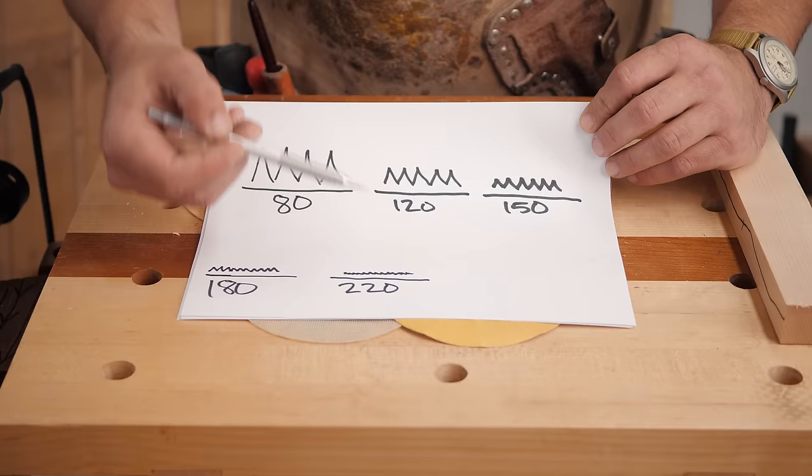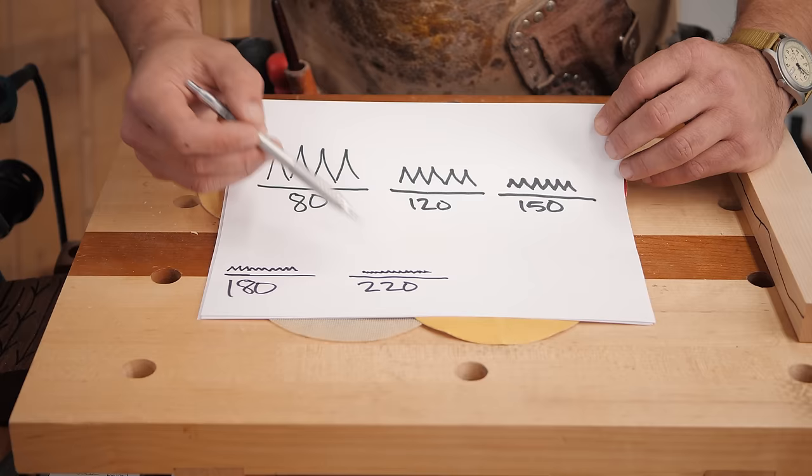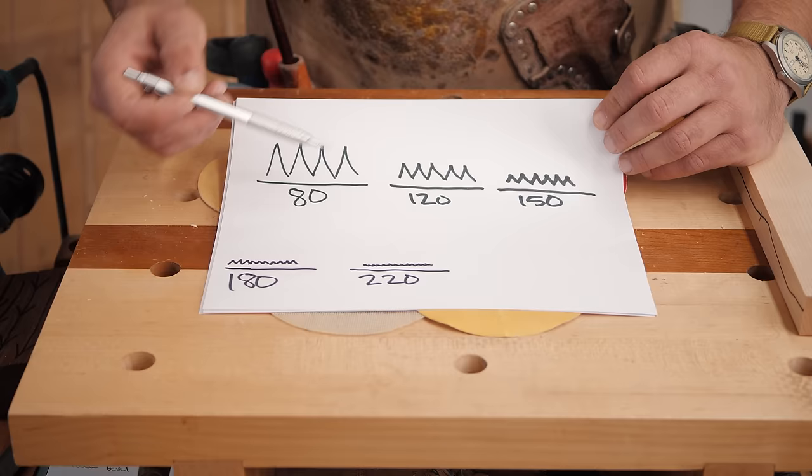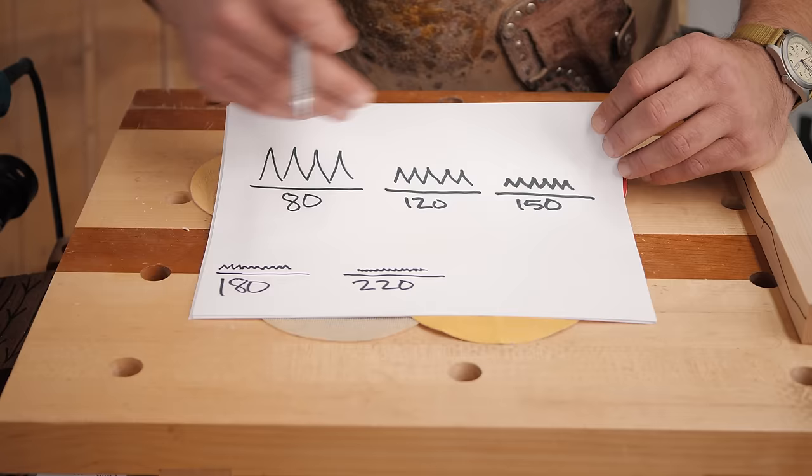And the reason you wouldn't just go from 80 to 220, let's say, is because the amount of time it's going to take to remove the scratches from the 80 with 220 is 20 times longer than it would be to just go 80, 120, 150, 180, and then 220 because the next grit up is going to have a much easier time removing the scratches.